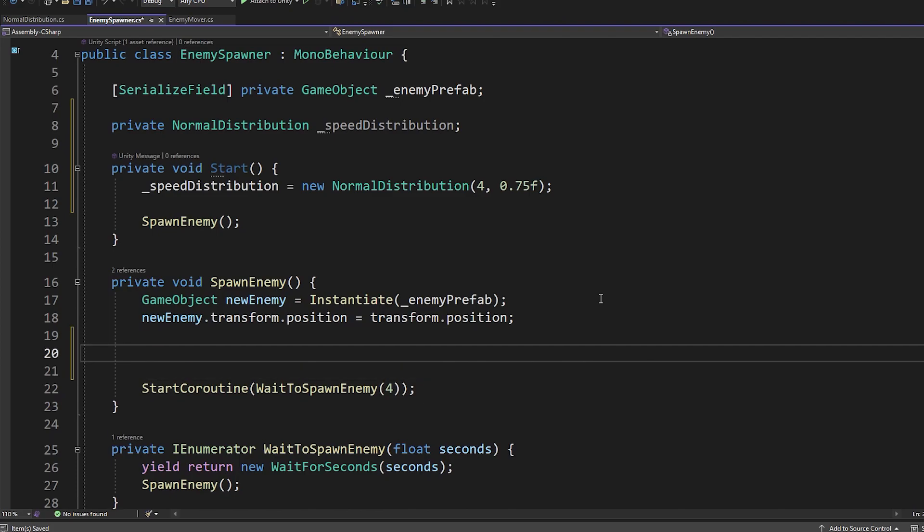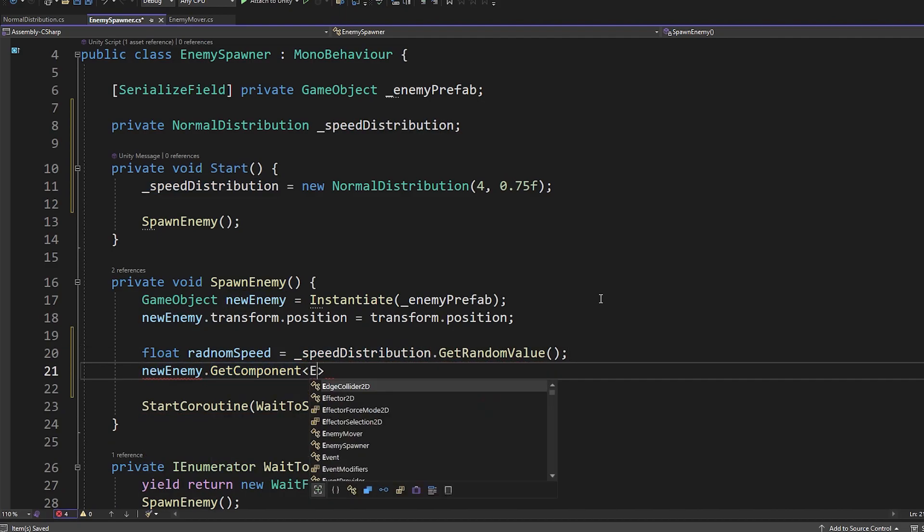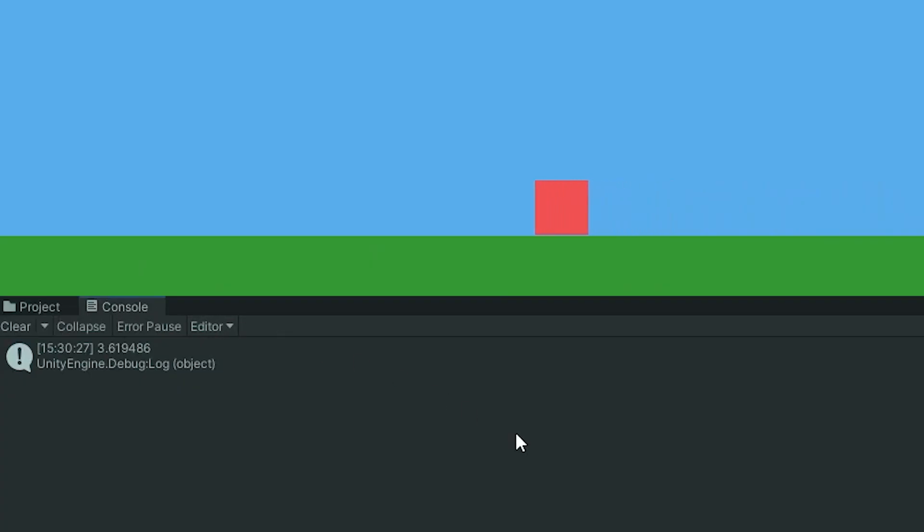Then in our enemy spawn function, we can make a float called random speed and set that equal to speed distribution dot get random value. Finally, we get the enemy mover component and call the set max speed function passing in our random speed. Heading back into Unity, we can hit play and see that everything works exactly the same. But now we've made a much cleaner implementation.